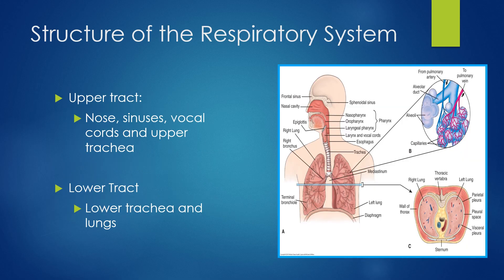The respiratory system is divided up into two tracts: the upper respiratory tract and the lower respiratory tract. The upper respiratory tract consists of the mouth, nose, sinuses, vocal cords, and the upper part of the trachea. The upper respiratory system warms and humidifies the air that we breathe in. The nose filters that air, trying to catch as many viruses, bacteria, and spores as possible before any of that gets into the lungs.